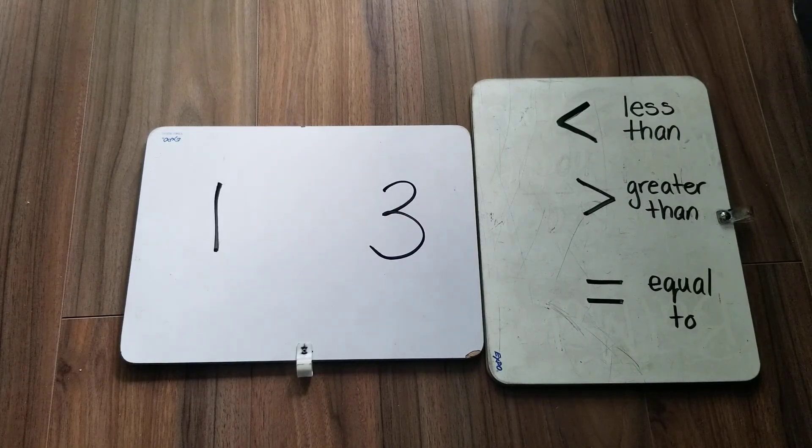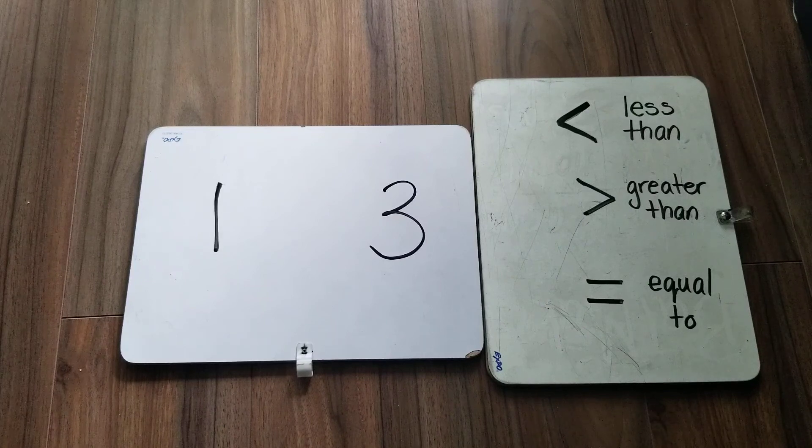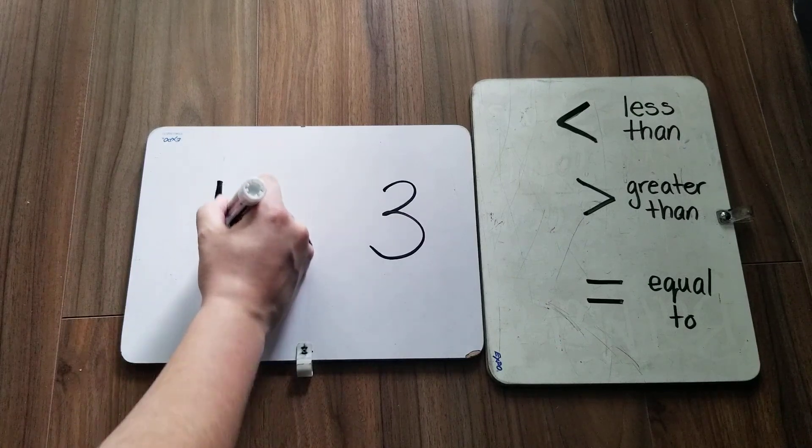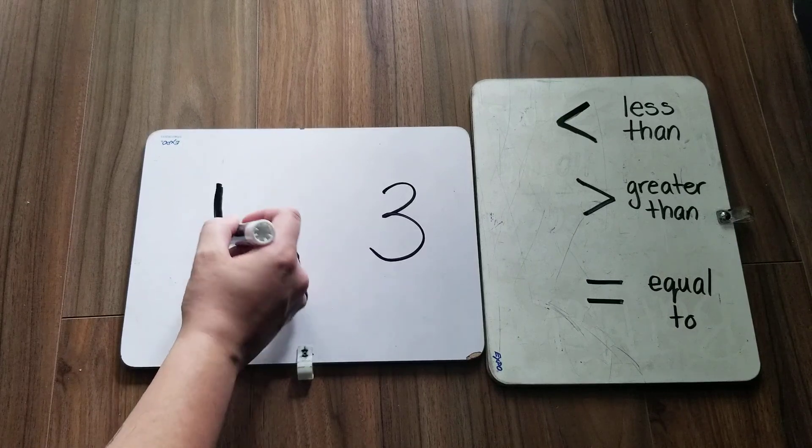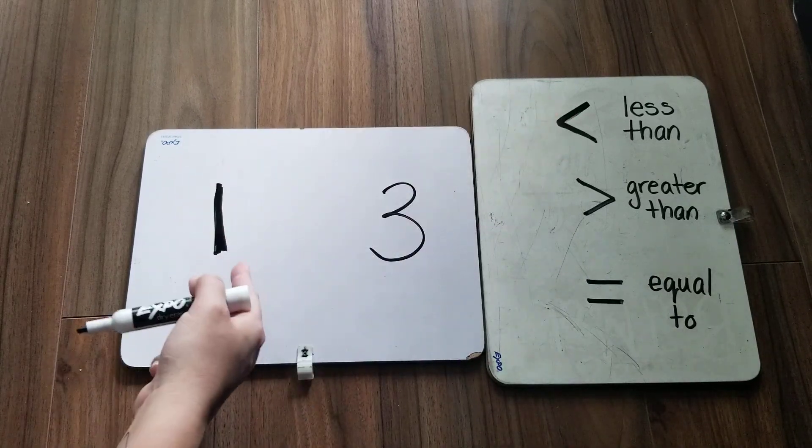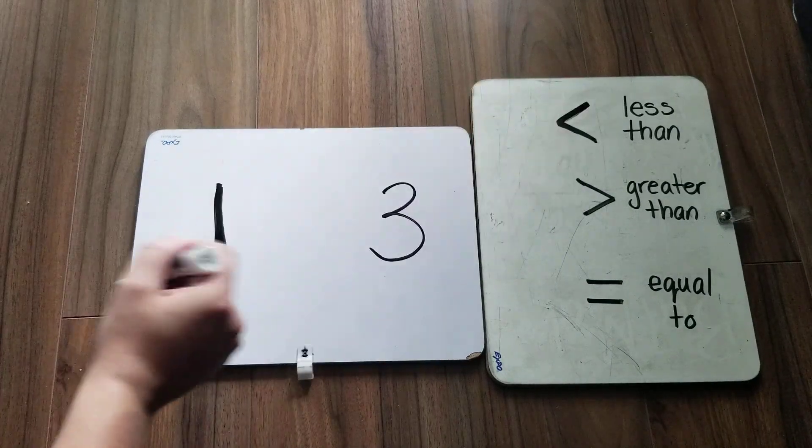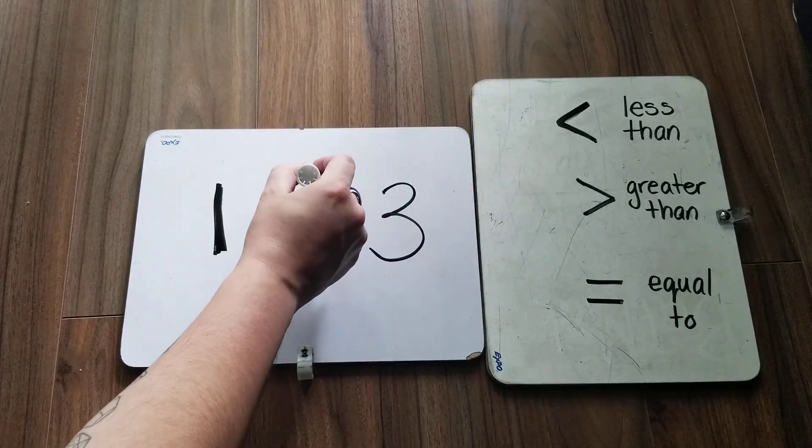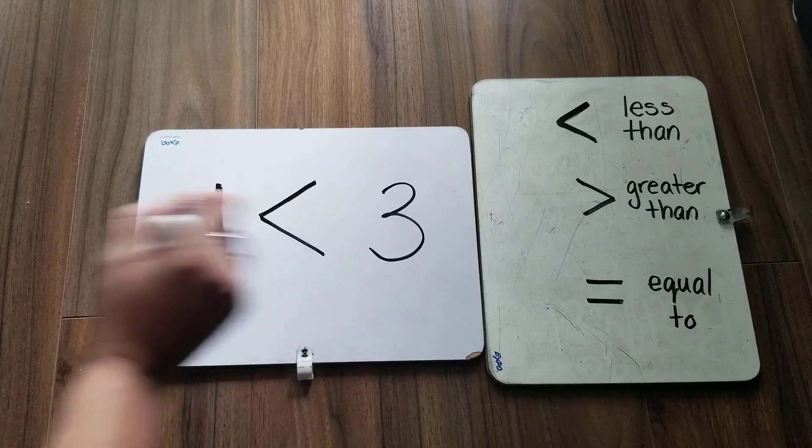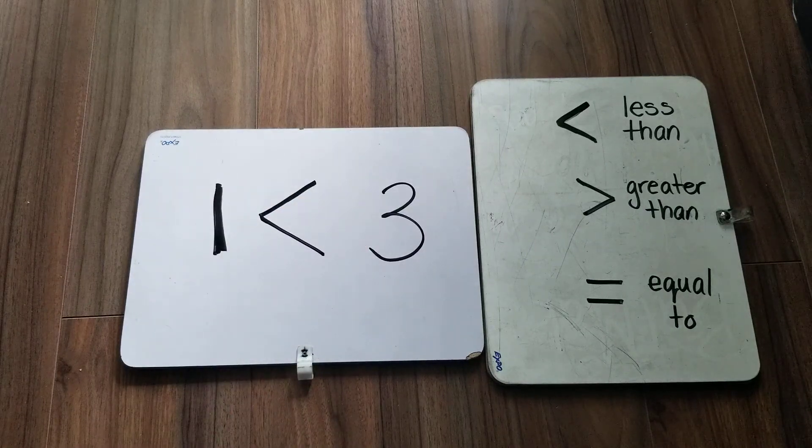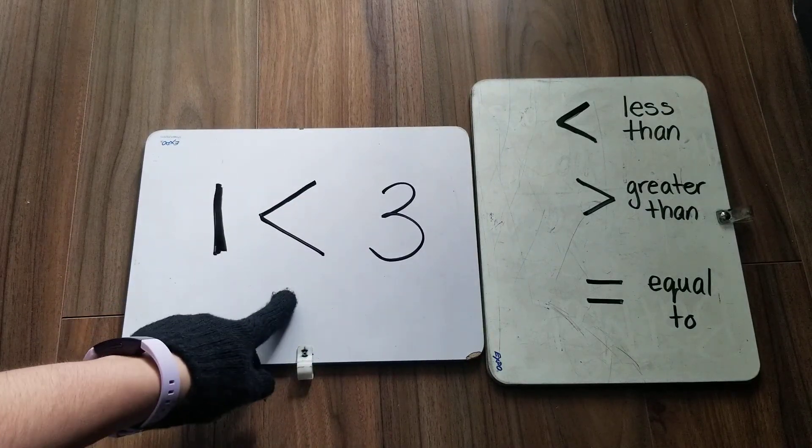So in this case, I would have to put the symbol in the order the numbers go. So is one less than three, greater than three, or equal to three? One is less than three, so I'm going to put my half triangle in there. This says one is less than three.